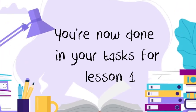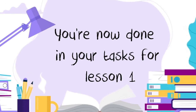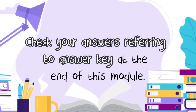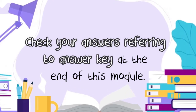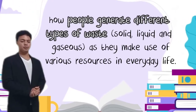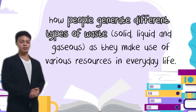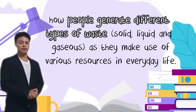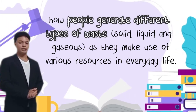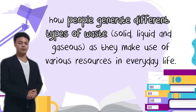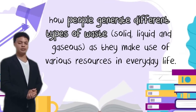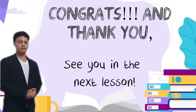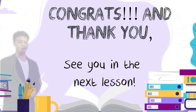You're now done with your task for Lesson 1. Check your answers by referring to the answer key at the end of this module. I assume that you can now describe how people generate different types of waste — solid, liquid, and gaseous — as they make use of various resources in everyday life. Congratulations and thank you, learners. See you in the next lesson.